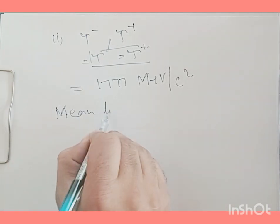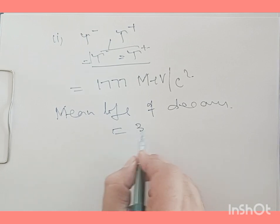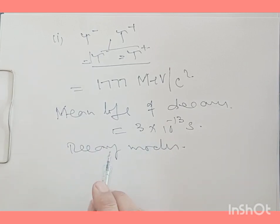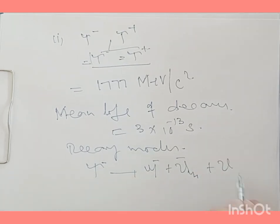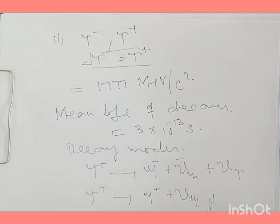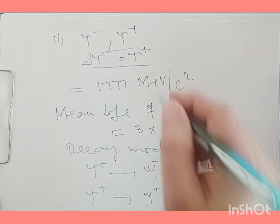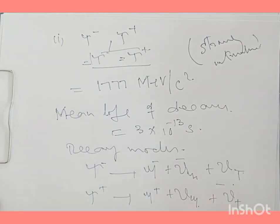The tau lepton and its anti-particle are unstable and they decay. The mean lifetime of the tau lepton is of the order of 3 × 10⁻¹³ seconds, which is nearly 30 picoseconds. The decay modes are: τ⁻ → μ⁻ + ν̄_μ + ν_τ, and τ⁺ → μ⁺ + ν_μ + ν̄_τ. Tau leptons participate in electromagnetic and weak interactions but never participate in strong interaction.